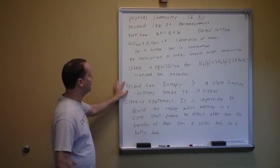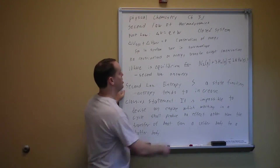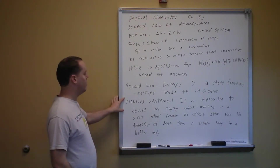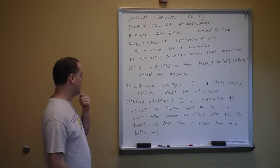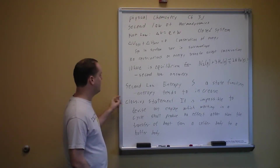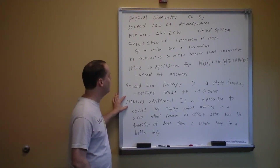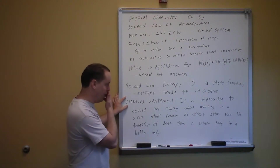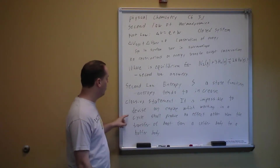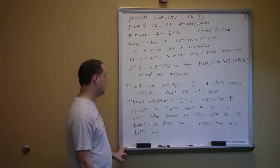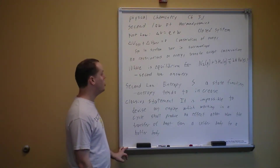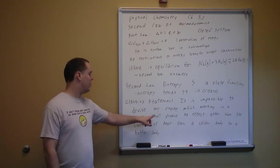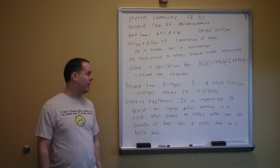The second law of thermodynamics introduces entropy, which is a state function denoted capital S. Entropy tends to increase, and that's going to become very important later. There are a couple of different ways of stating the second law. One is the Clausius Statement: it is impossible to devise an engine which, working in a cycle, shall produce no effect other than the transfer of heat from a colder body to a hotter body. It's important to understand this is only true for a cyclic process.